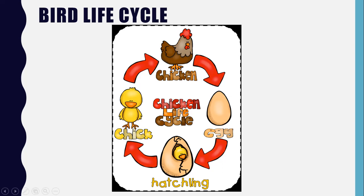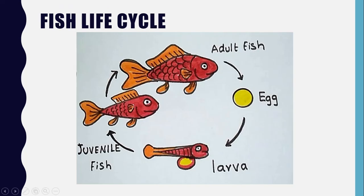For the bird life cycle, we also have an egg. The adult chicken lays the egg, the egg hatches, and then we have a chick. The chick grows up to be an adult, the adult lays the egg, the egg hatches, and so forth — it just continues, which is why it's a circle. For fish, the adult fish lay the egg, then we have little baby fish called larva, then juvenile fish which are like teenager fish, and those grow up to be adult fish. Then they lay eggs, and it's just a cycle.